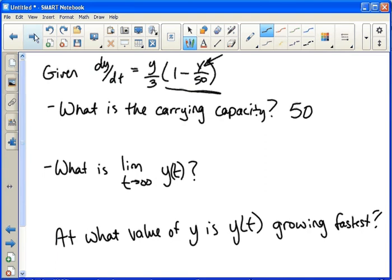Okay, and then the limit as t approaches infinity, well that's going to be the carrying capacity. So it's just 50. And then at what value of y is y of t growing fastest? We just said that it's going to grow fastest at half the carrying capacity. That's when it's growing fastest. The growth is going to start to steady off and level off. That's what I was looking for once you hit the halfway point.